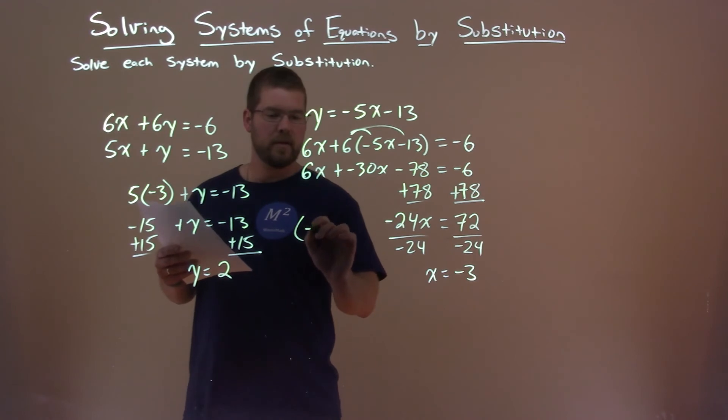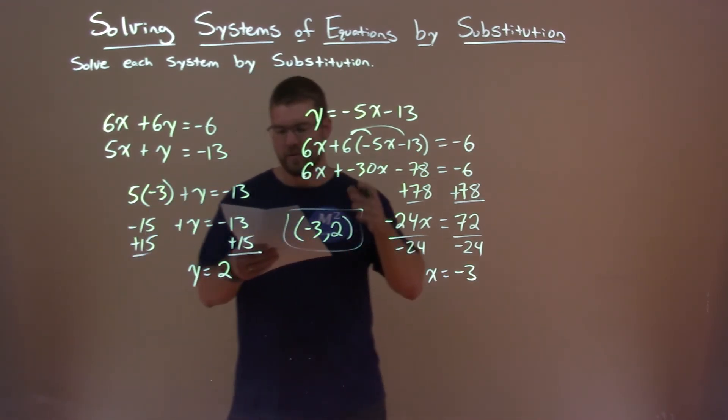So we get the coordinate point here, negative 3 comma positive 2, and that is our final answer.